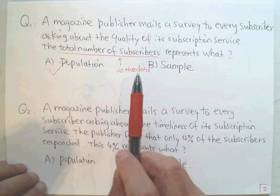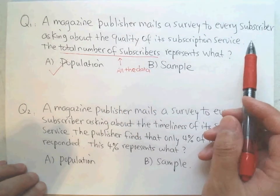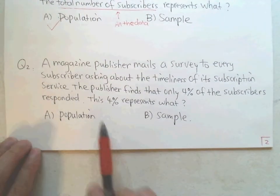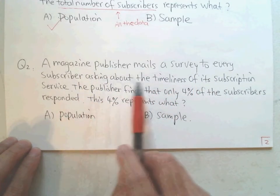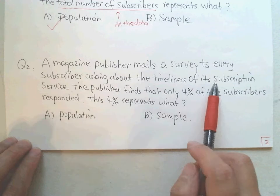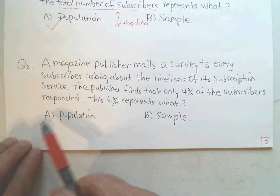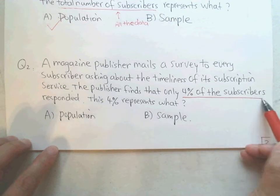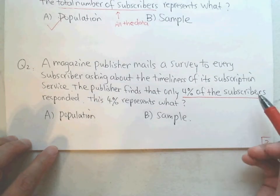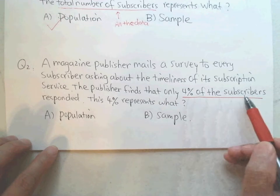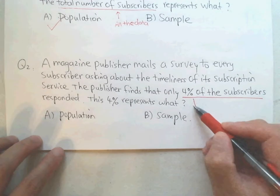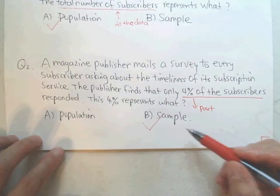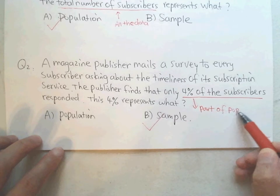Usually in statistics we don't have all the data — we need to draw a small sample to estimate. Now look at the second example: a magazine publisher mails a survey to every subscriber asking about the quality of their subscription service, and the publisher found that only four percent of the subscribers responded. All the subscribers are the population, and four percent — this small part — is a part of the population. Part of the population is a sample.